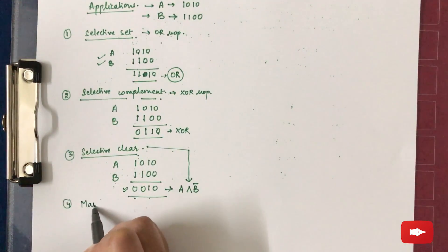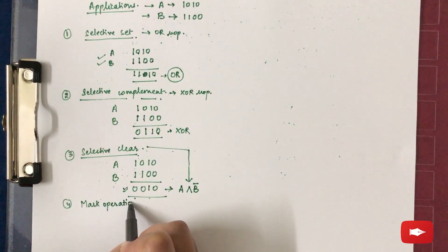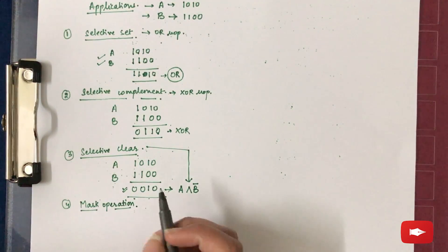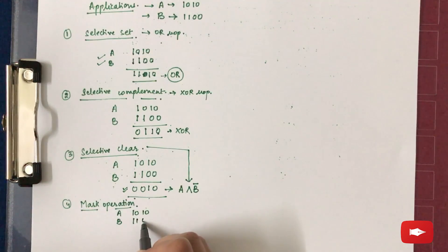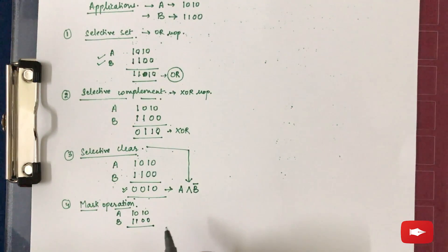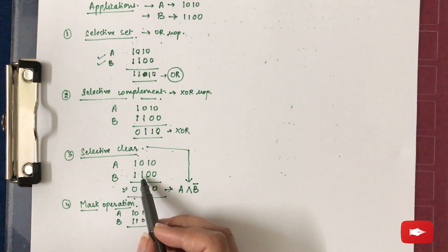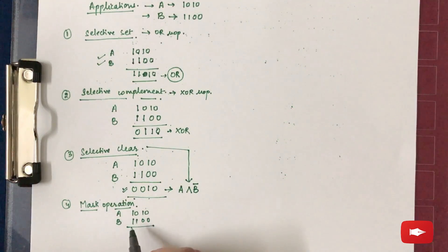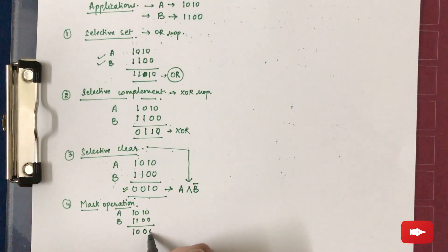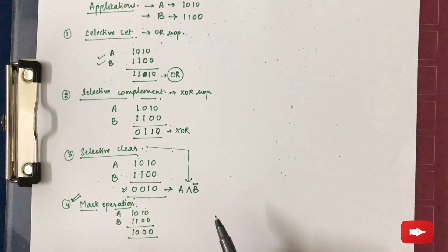The fourth application is the mask operation, which is similar to selective clear but with an important difference. In selective clear, wherever B is 1, we make A 0. Whereas in the mask operation, wherever the value of B is 0, we make the value of A 0. The remaining bits stay the same. This mask operation is important from the exam point of view.